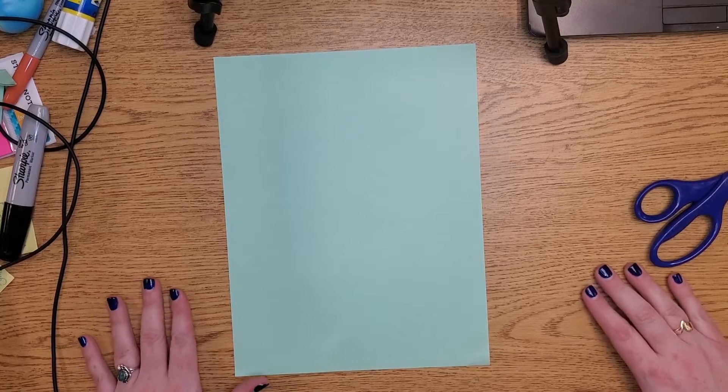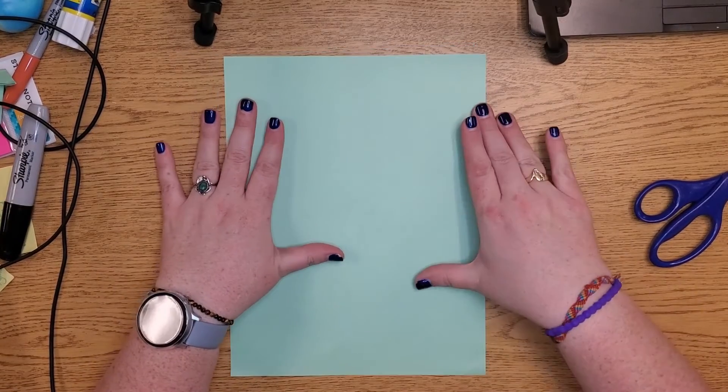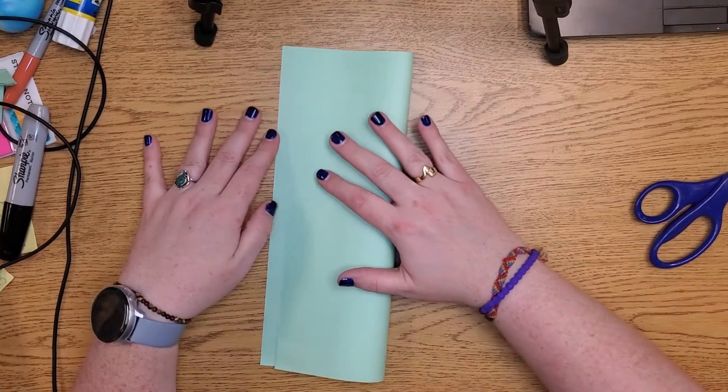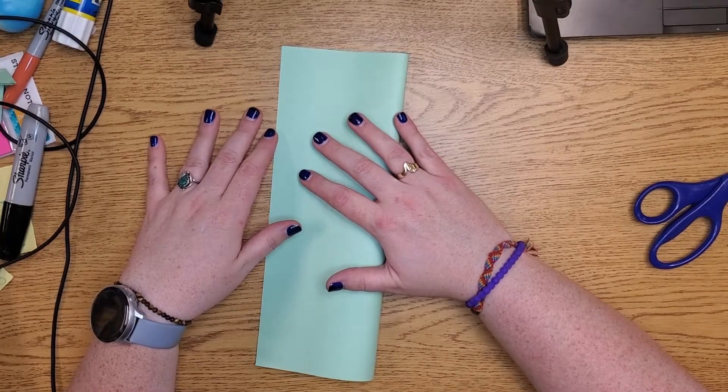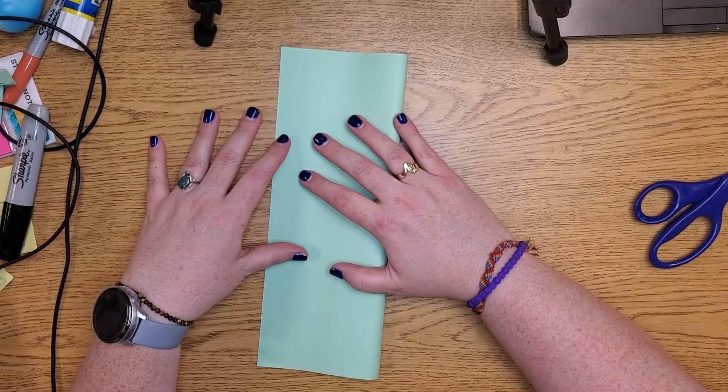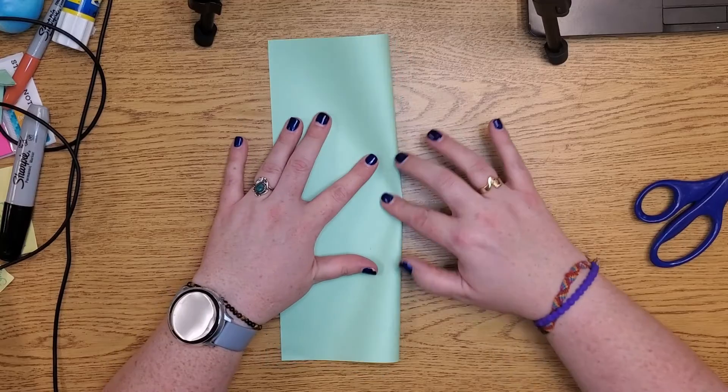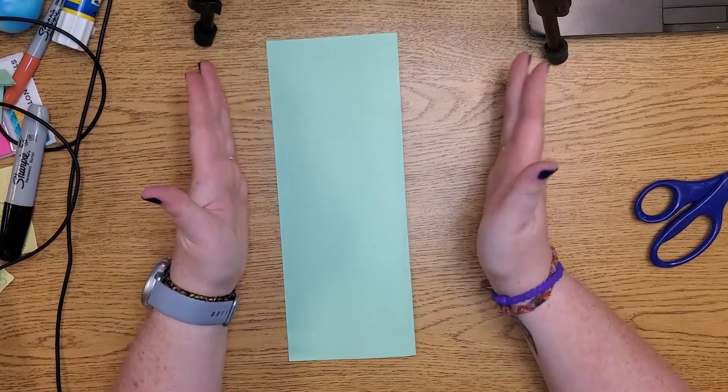Okay, so what you do is you're going to start with your eight and a half by eleven paper, fold it hot dog style. So remember hot dog is where it is tall and skinny and not wide like a book.